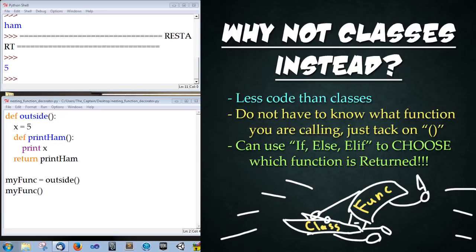So you may be asking yourself why not just use a class? Well for one this uses less lines of code than a class. Also with classes you have to know what function that you want to call. With this method all we need to do is just add open close parentheses to the end of the function and it calls whatever is being passed out of the outside function. Also you can use conditionals within the definition of the outside function so be like if some condition like x is like greater than 5 then use this function. Otherwise return another function. So this stuff is really cool.